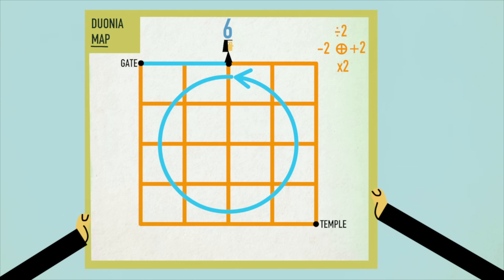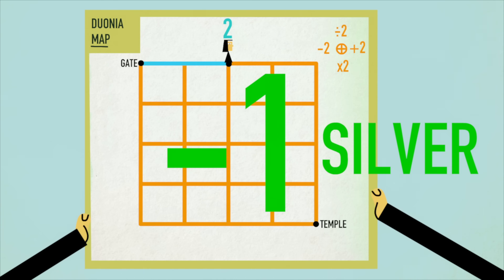What about a counterclockwise loop, then? Starting owing four again and going south first, your bill changes to eight, ten, five, and three. Looping again, you'd owe six, eight, four, and two. Each counterclockwise loop actually earns you one silver.